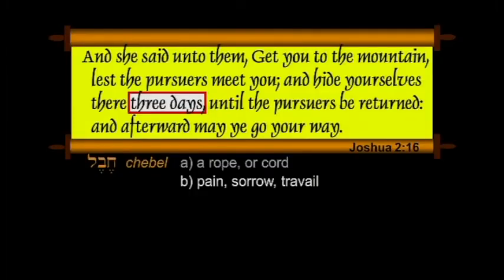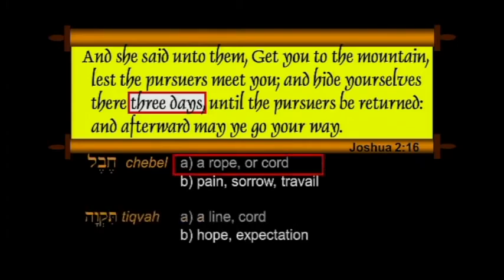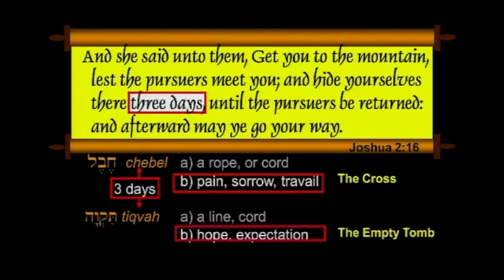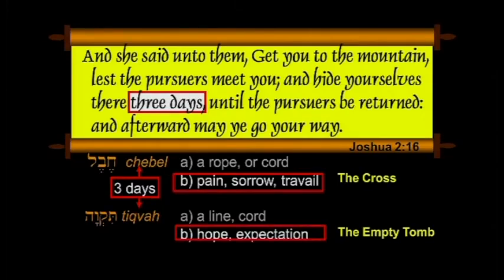Let's examine the text and see what the Holy Spirit is doing. Hebel can mean a rope or cord — but it's a pun, and can also mean pain, sorrow, or travail. Tikvah can mean a rope or cord — but it's also a pun, and can mean hope and expectation. We understand that the ultimate pain and travail is the cross. The ultimate hope is the empty tomb. And how much space is between Hebel and Tikvah? Three days — between the cross and the empty tomb.